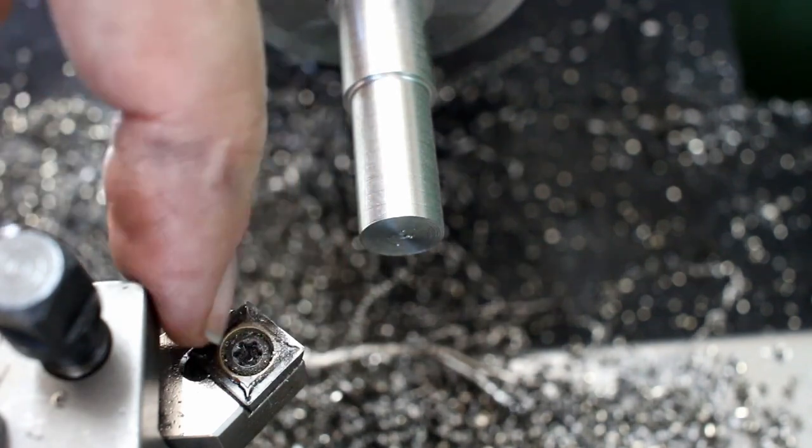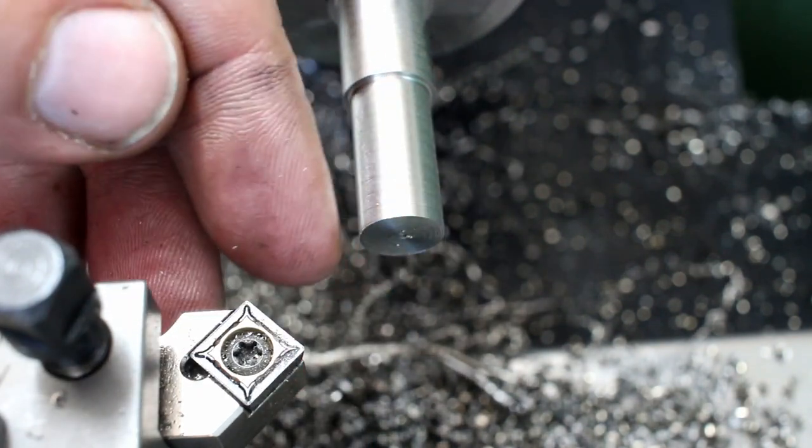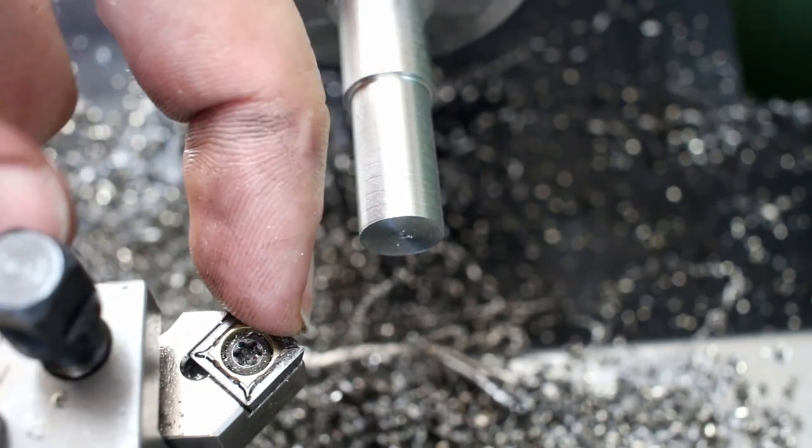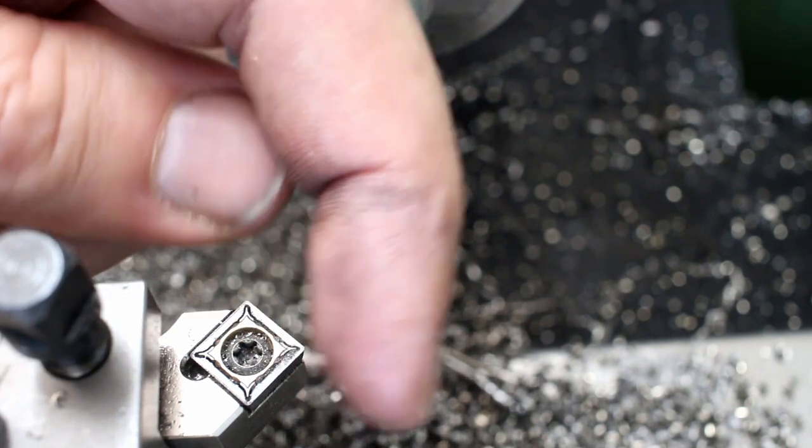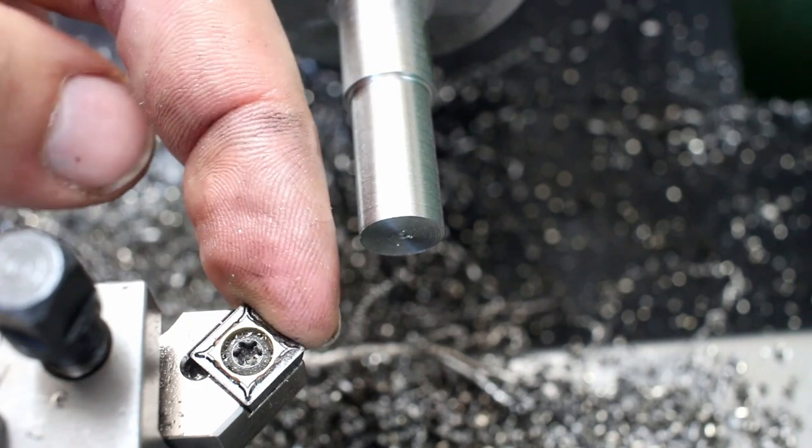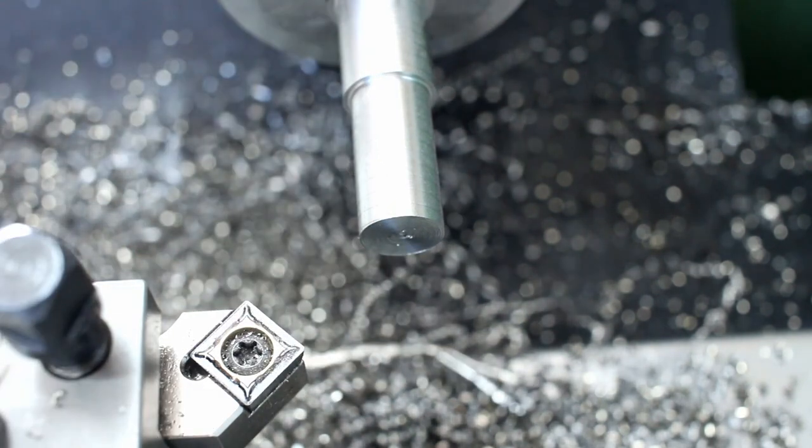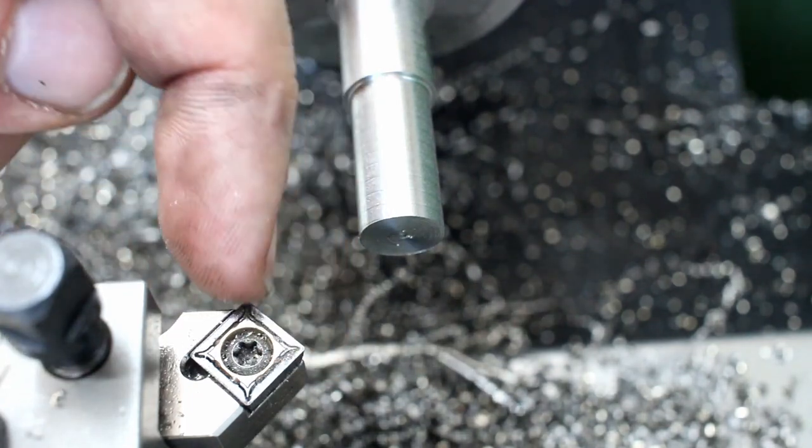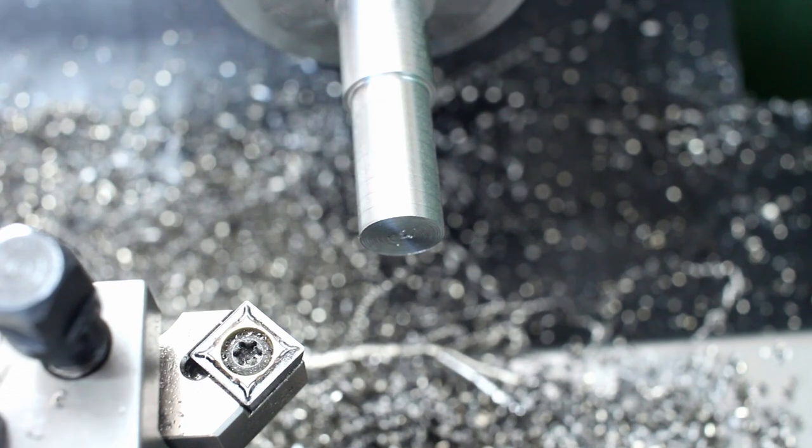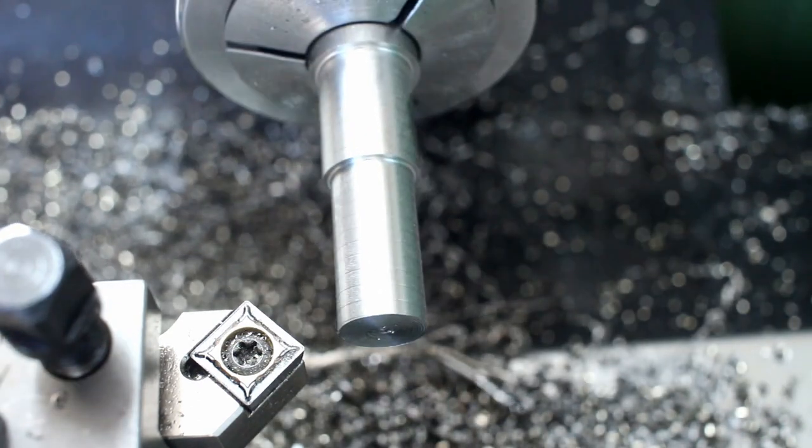This is a square insert, positive geometry, 70-degree clearance to the bottom with a 45-degree lead. This is a very useful tool. First of all, these inserts have a very tough geometry due to the fact that they're 90 degrees. You can use these for roughing, facing, and turning. You cannot work up to a shoulder because of the 45-degree lead.